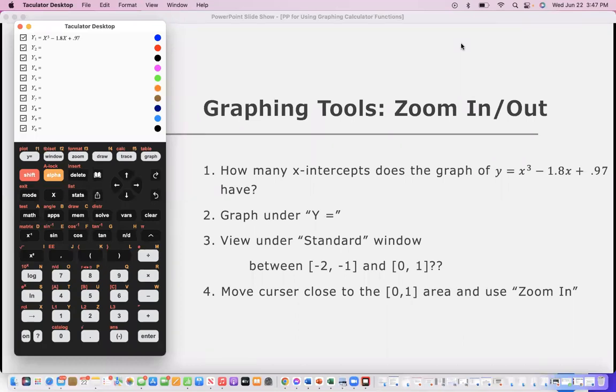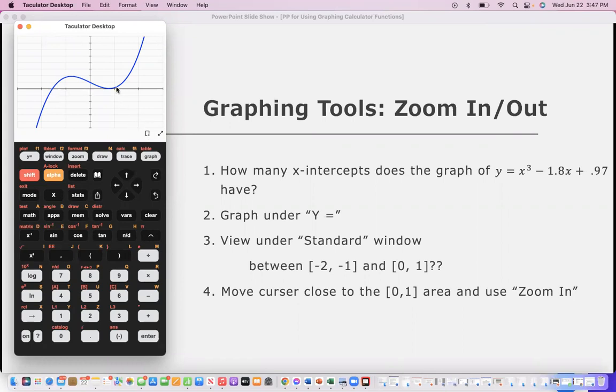One of the other helpful features is the zoom in and zoom out feature that you have under zoom. In fact, it's the first two choices under zoom. So, for example, if we want to look at how many places this equation here is crossing the x-axis, if I graph this, it appears that it crosses in two places, touches here and crosses here. But does it?